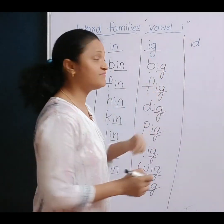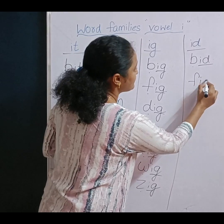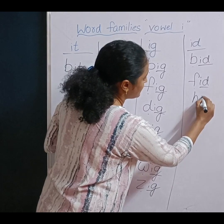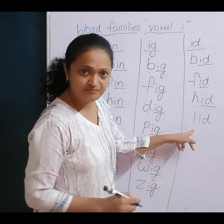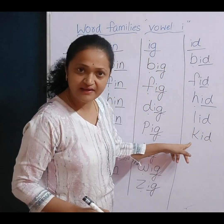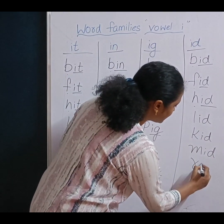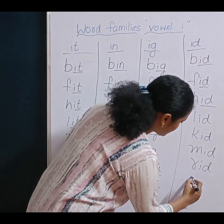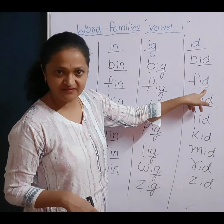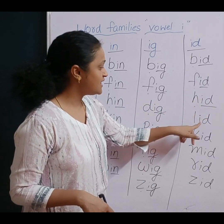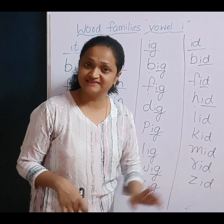Now Id family words. B-id, B-id. F-id Feed. H-id Head. L-id Lead. K-id Kid. M-id Mid. L-id Red. Z-id. Now revise: B-id Bed, F-id Feed, H-id Head, L-id Lead, K-id Kid, M-id Mid, L-id Red, Z-id.